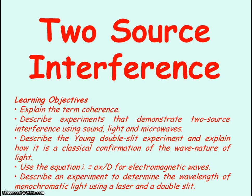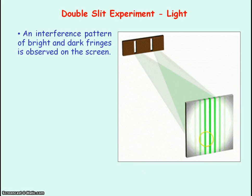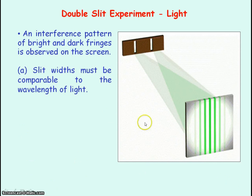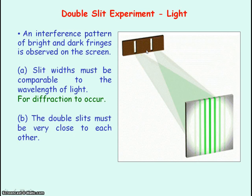We're going to be looking at the two-source interference of waves. If light is passed through two slits, an interference pattern occurs between the light waves to produce bright and dark fringes. For the interference pattern to be observed, the size of the slits — its width — must be comparable in size to the wavelength of light, so that sufficient diffraction will occur. Also, the two slits must be close to each other so that the diffracted light can meet and interfere to produce this interference pattern.